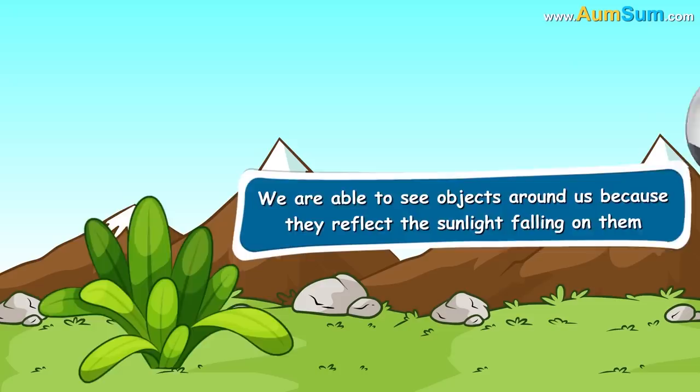First of all, we are able to see objects around us because they reflect the sunlight falling on them.